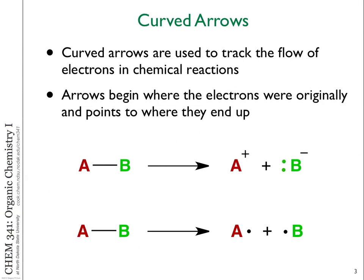We also talked about how we write chemistry in terms of arrow notation. There are several different kinds of arrows: reaction arrows, equilibrium arrows, resonance arrows, and we talked about how to describe electron flow using curved arrows. Whenever we see curvy arrows, that's indicating where electrons are moving.